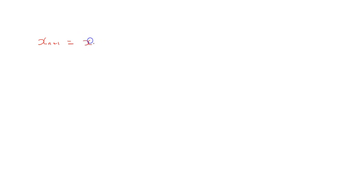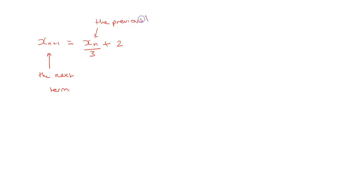Iteration is a method used for estimating solutions to equations that you couldn't normally solve algebraically. You'll typically see something like x_n+1 equals something like x_n over 3 plus 2 - this might be squared or involve a square root, but in its simplest form this means that the next term is the previous term divided by 3 plus 2. So in an iterative formula, to find the next term you use your previous value.